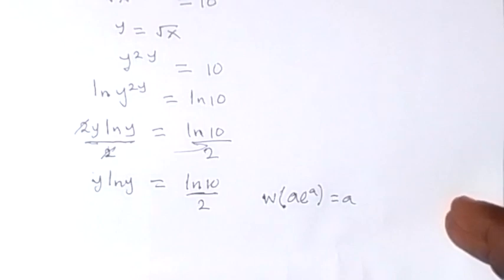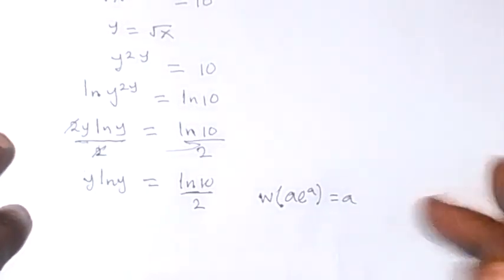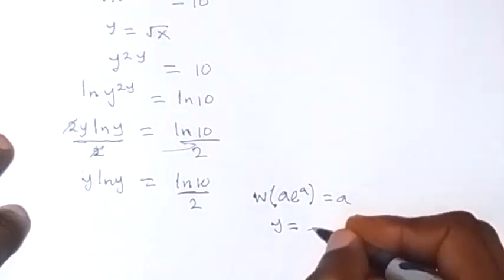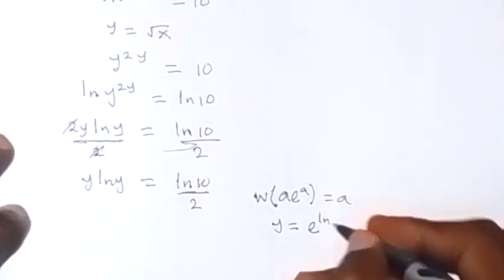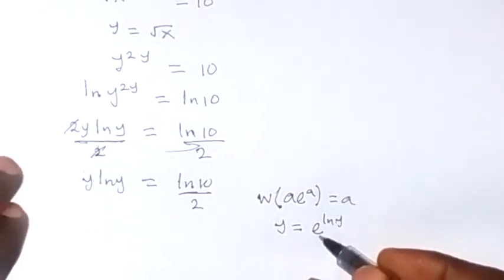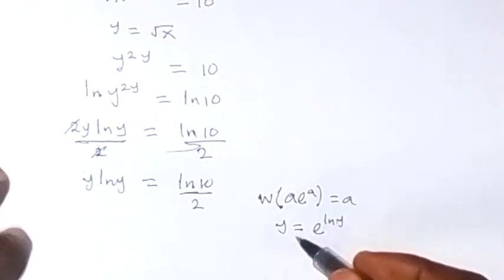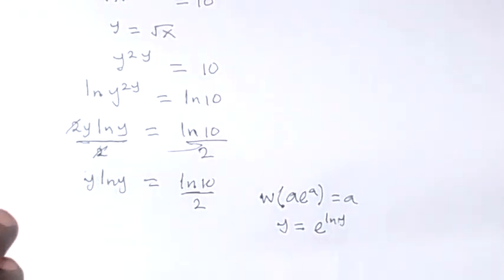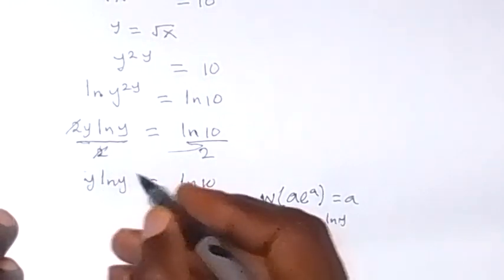Then, also we should note that we have y can be written as exponent ln y. That is exponent and ln, when they cancel each other, we have y left. So instead of writing y here, we can write it as exponential ln y, and then we have ln y.